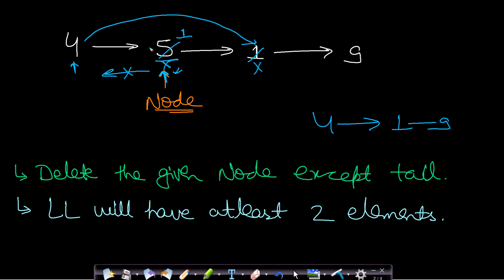In this way we can delete this current node, but then you can see that we are not actually deleting the current node, we are deleting the next node. So in this case it is asking that delete the given node except the tail, because this method will not work for the tail case.